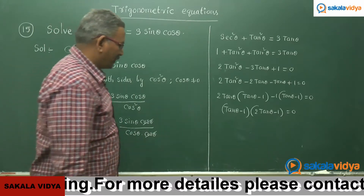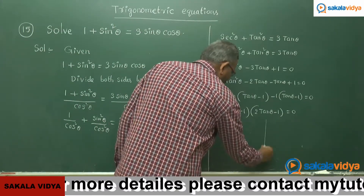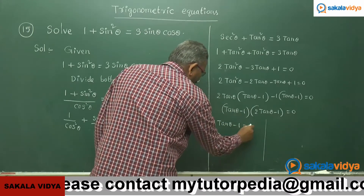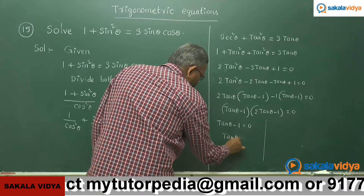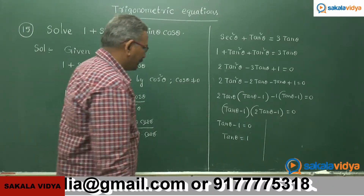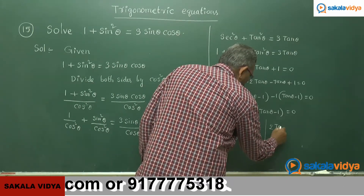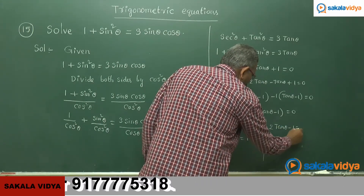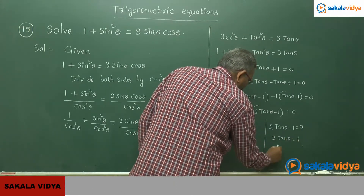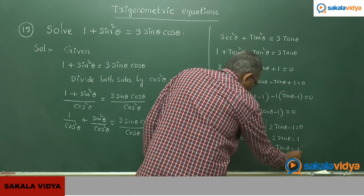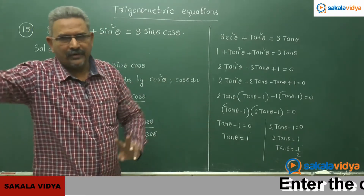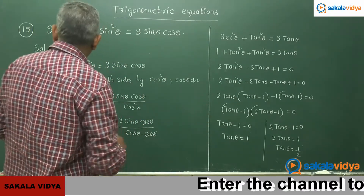We get two solutions. From the first factor: tan theta minus 1 equals to 0, so tan theta equals to 1. From the second factor: 2 tan theta minus 1 equals to 0, giving tan theta equals to 1 by 2. These two equations are now to be solved separately.